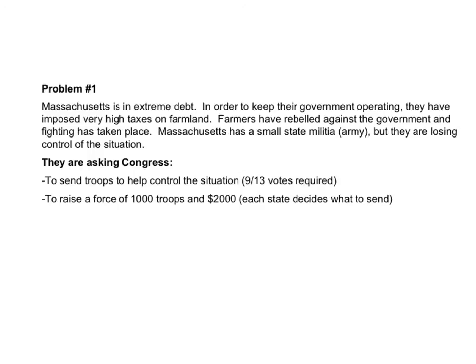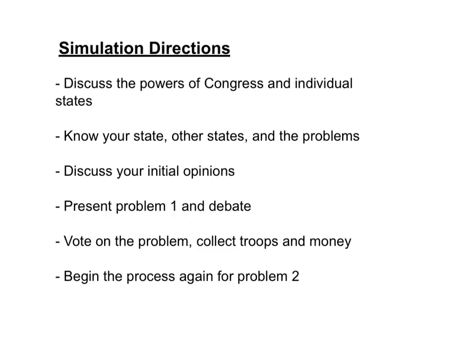What typically happens is we get enough votes to allow troops to be sent, but then each state is not willing to send enough troops, and the 1,000-troop request — or the money request — is not met. It's purposely designed this way because I want to demonstrate that under the Articles of Confederation, each state was really looking out for themselves, and it was very difficult to get anything done. Once we've worked through the first problem — and usually it fails — we move on to the second problem, and then finally the third.